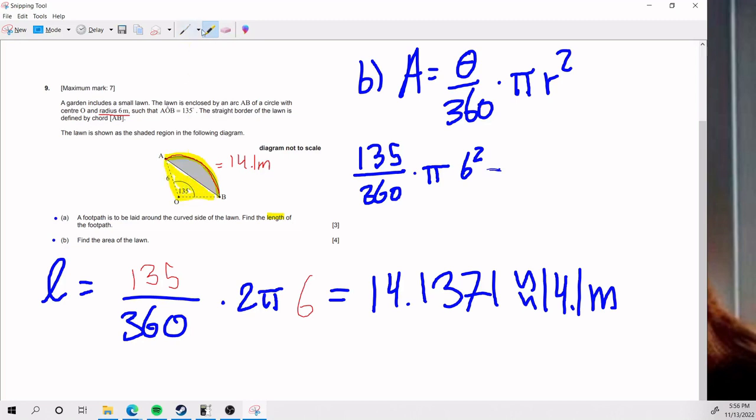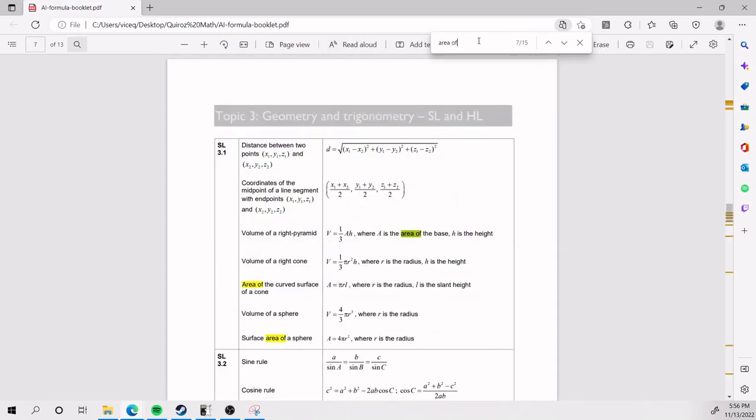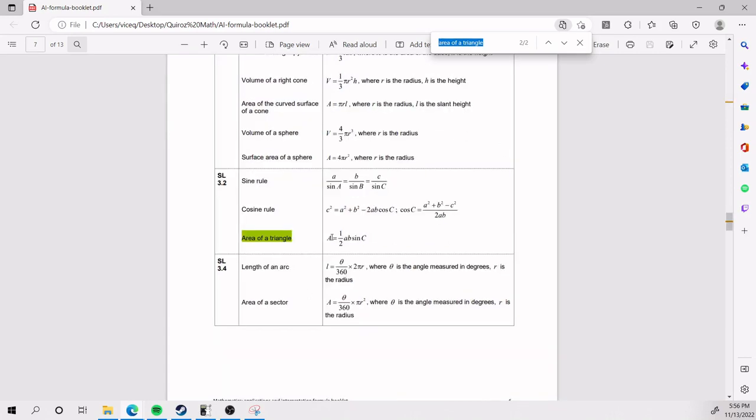And so we're looking at this triangle there. Now what do we know about that triangle? We know that we have the point A, O, B. We know that this is 6, this is 6, and this is 135. So now we're in the land of trigonometry and stuff like that. And so there's a couple ways to try to get the other sides, the missing angles, etc. But again, if you're familiar with the formula booklet, you can go to area of a triangle. And there's two of them. We have the one where it's the classic base times height divided by 2, and the other one, which is the trigonometry version, where we have 1 half AB sine C.